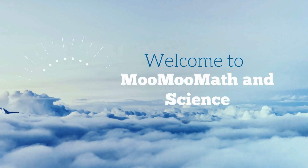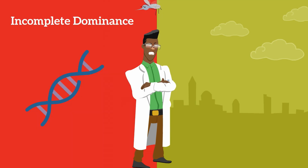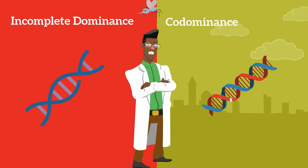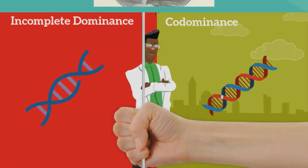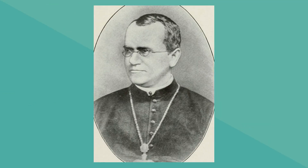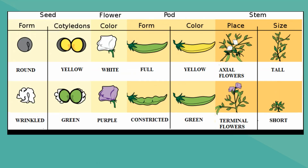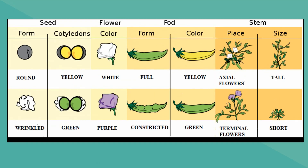Welcome to Moo Moo Math and Science. In this video I would like to talk about incomplete dominance and co-dominance. Gregor Mendel is the father of genetics. He is famous for his pea plants. He would cross pea plants and study the offspring.